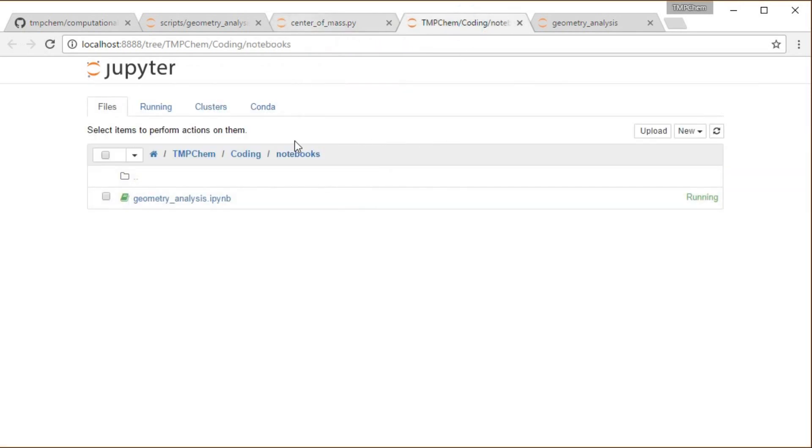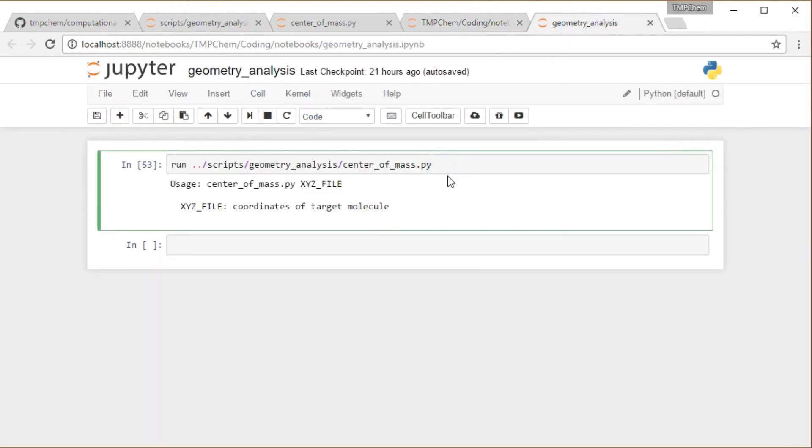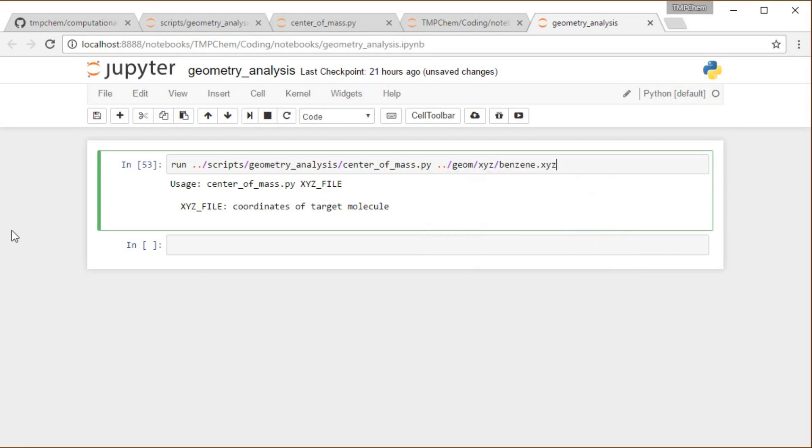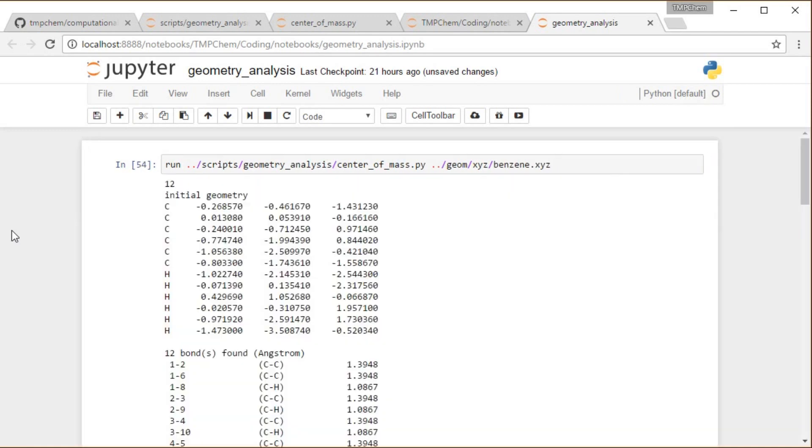So executing this from an iPython notebook from the top level directory, I just have the notebook subdirectory that this is inside of. And once again, as usual, if I run it without any input arguments, I get the usage. I need to give it an XYZ file to act on. So why don't I go ahead and hit tab geometry, tab XYZ, tab what molecule shall we try? How about benzene? Shift enter to run that.